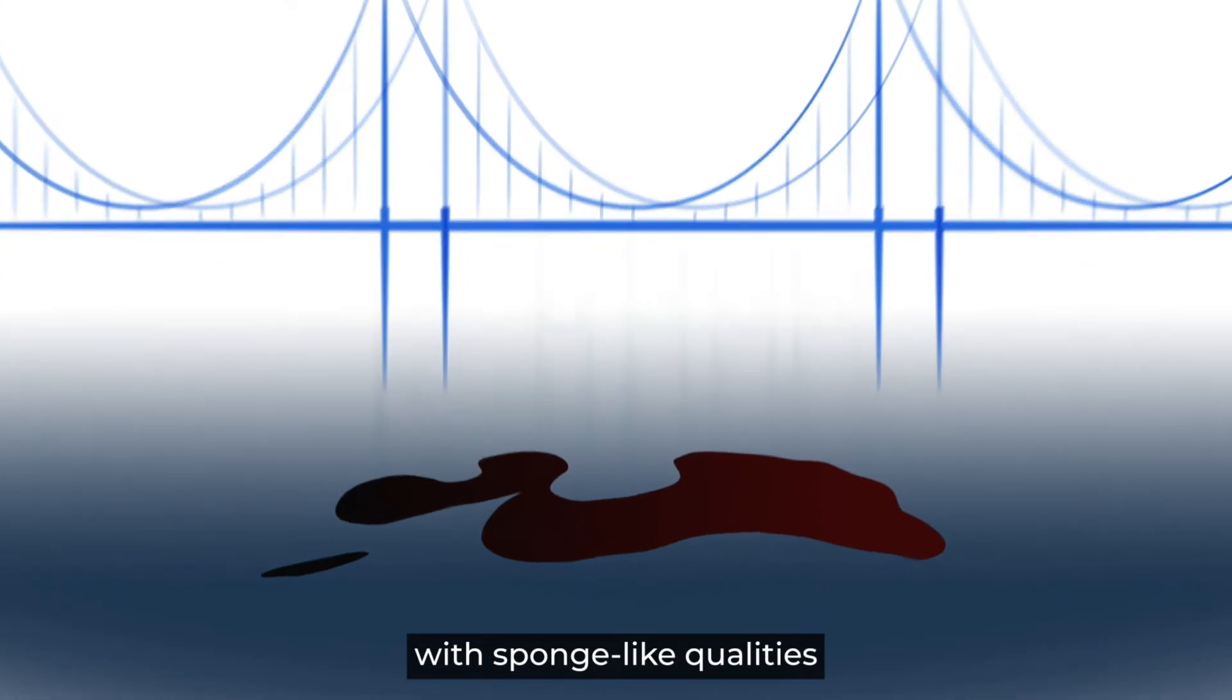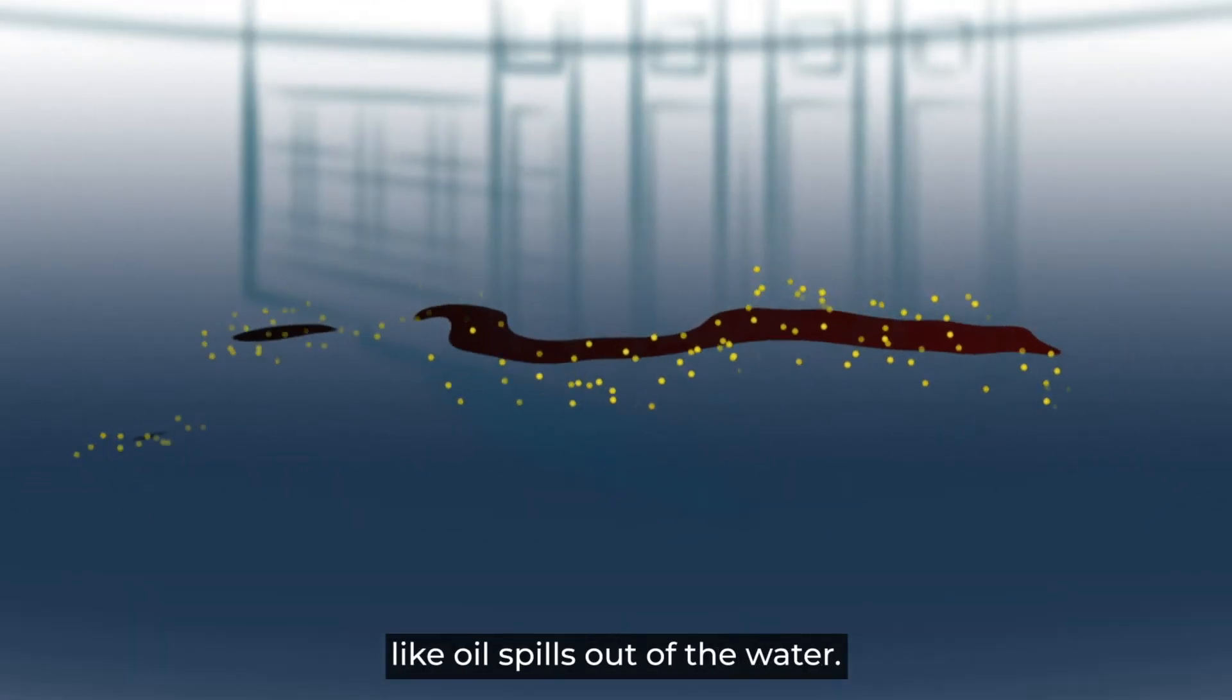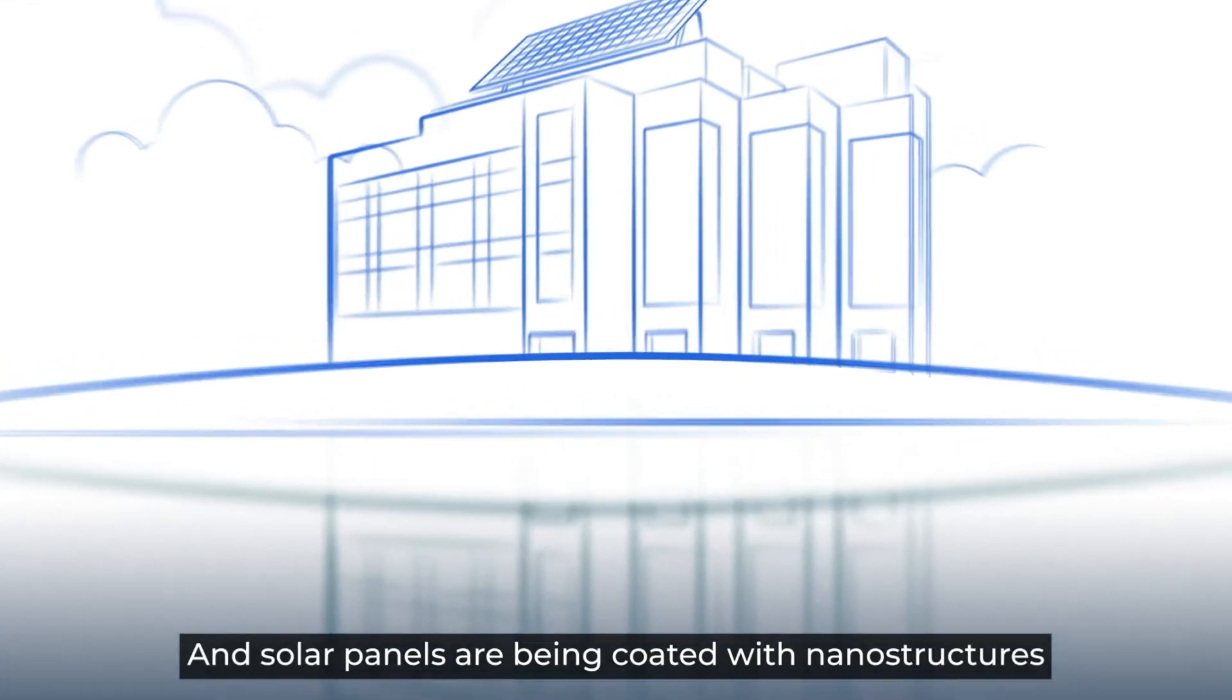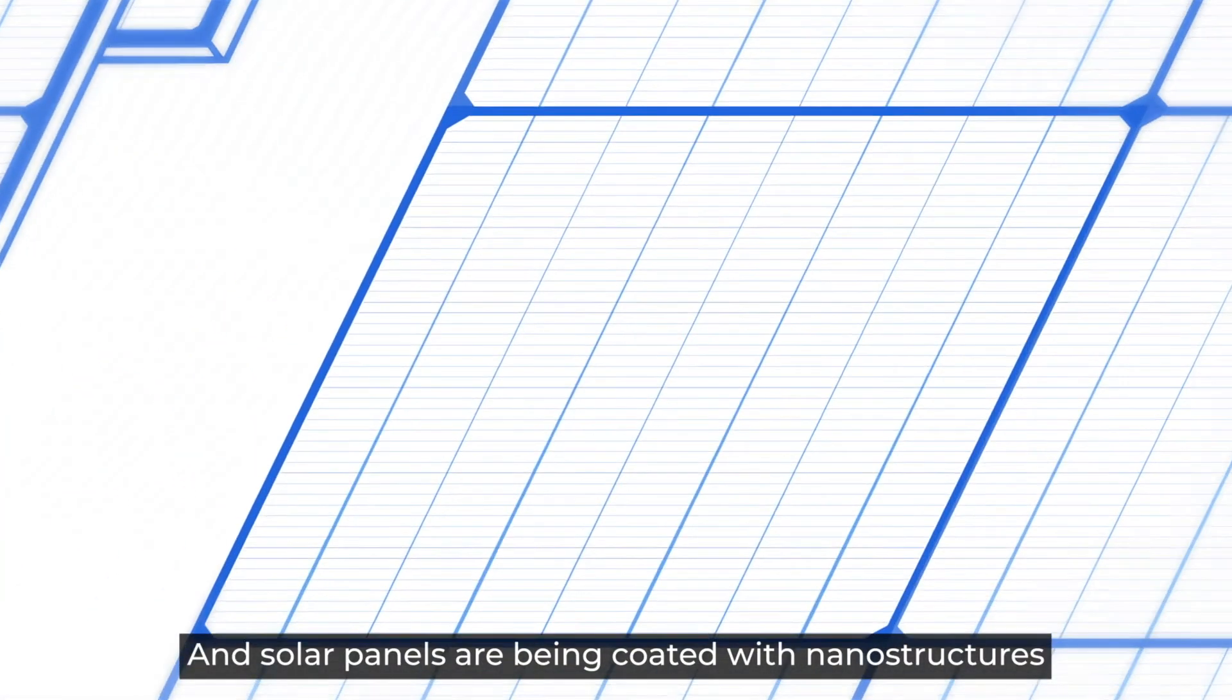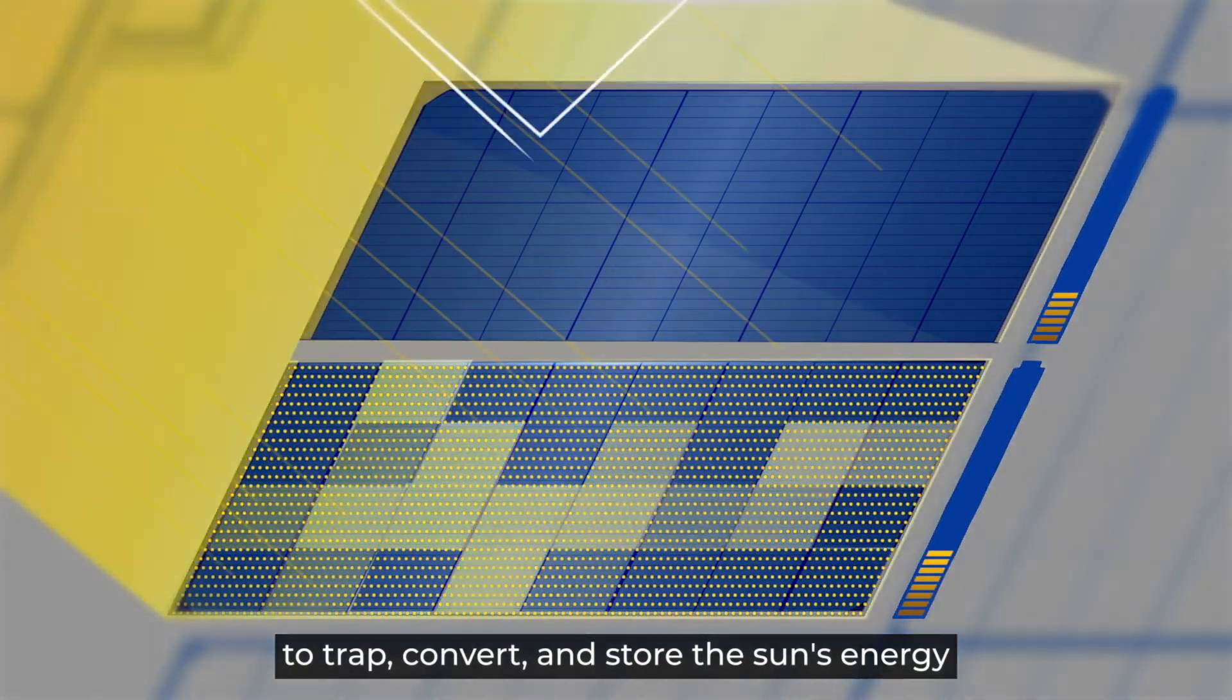Nanomaterials are being designed with sponge-like qualities to soak up environmental toxins like oil spills out of the water. And solar panels are being coated with nanostructures to trap, convert, and store the sun's energy more efficiently.